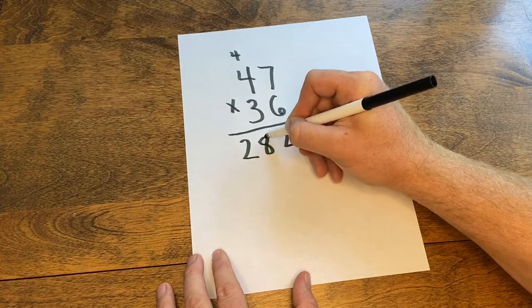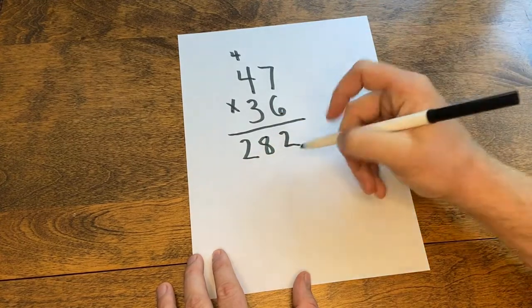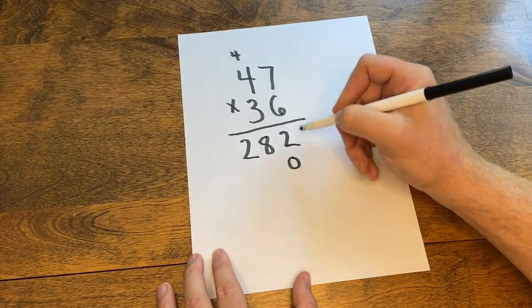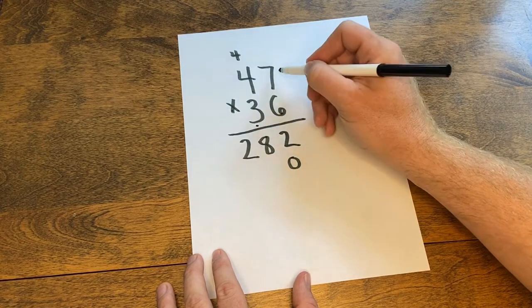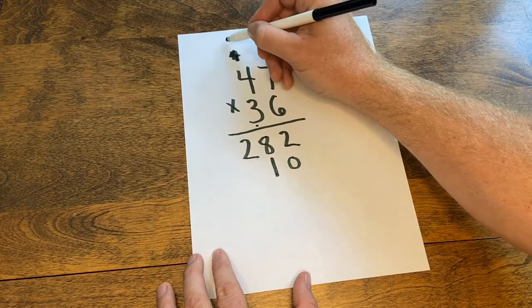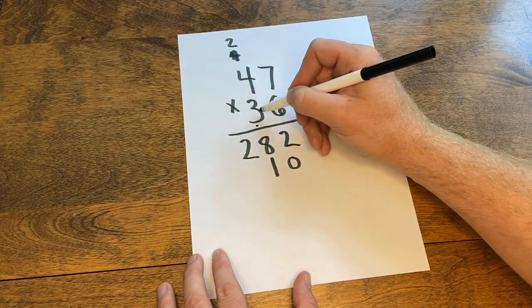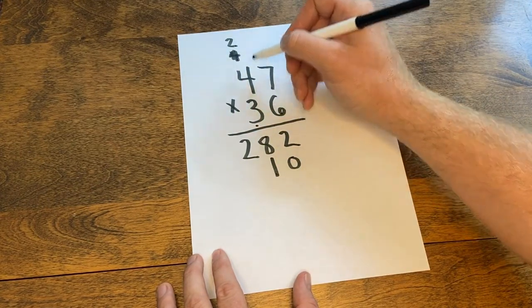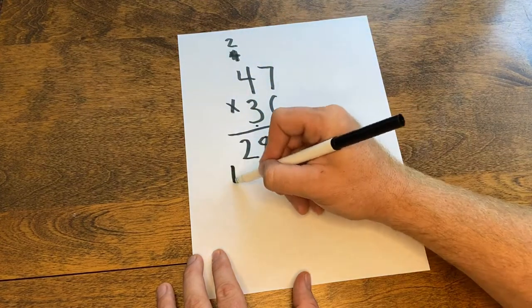Then we're going to abracadabra magic zero as our placeholder and we'll go to our three. Three times seven is twenty-one, put the one down, carry the two. And three times four is twelve, plus two more is fourteen.